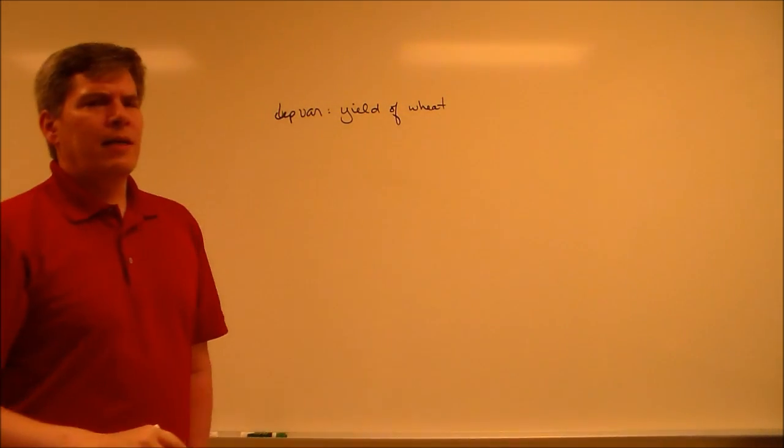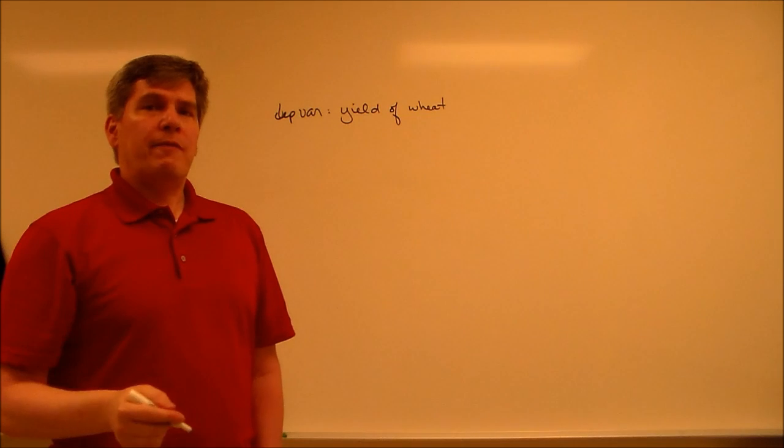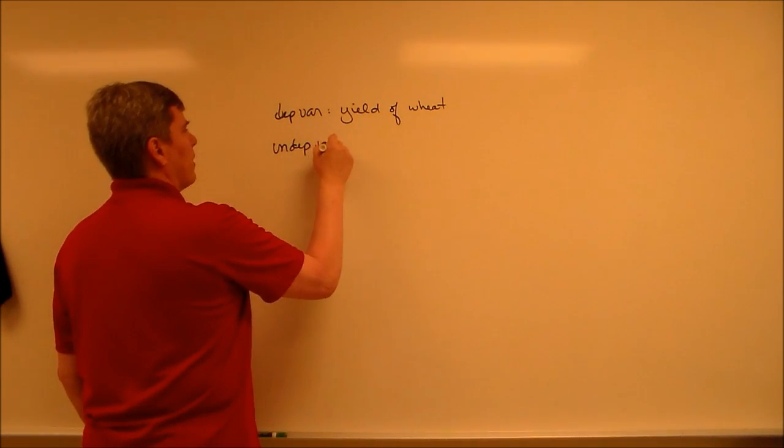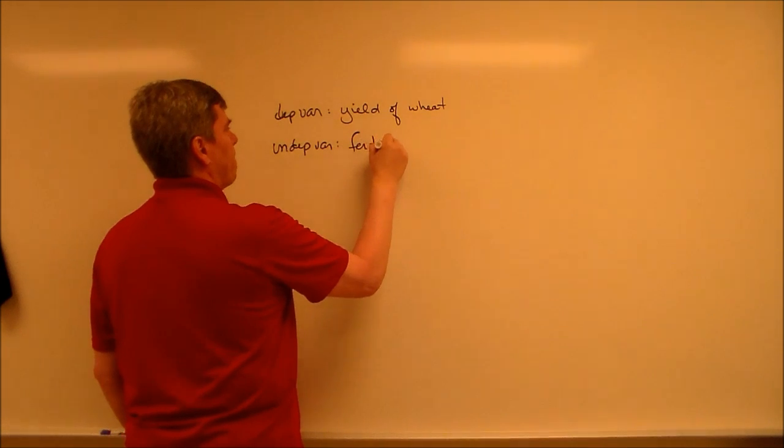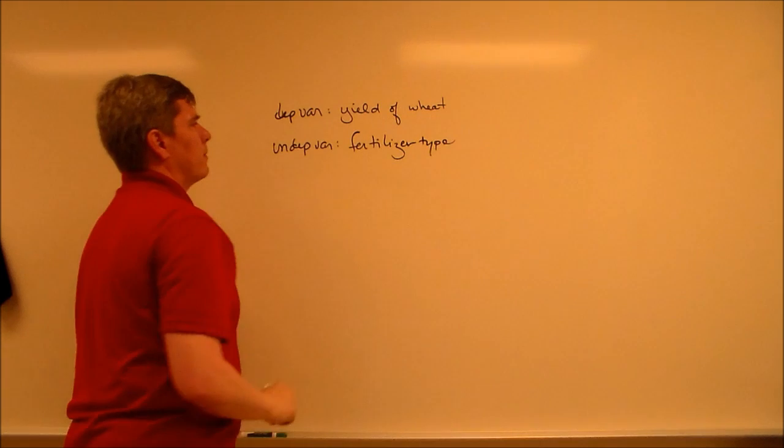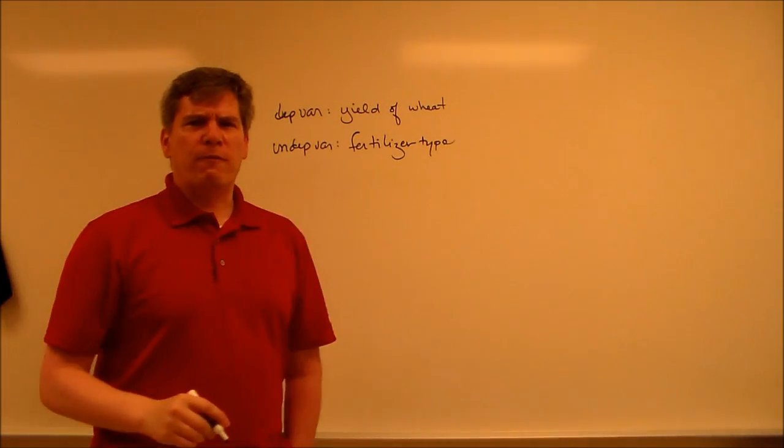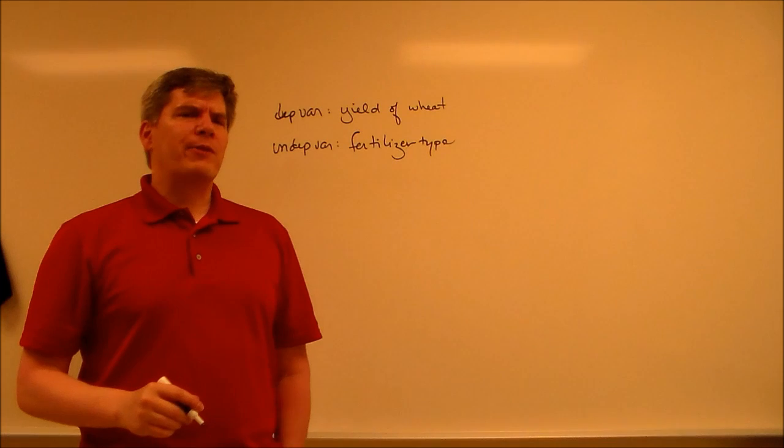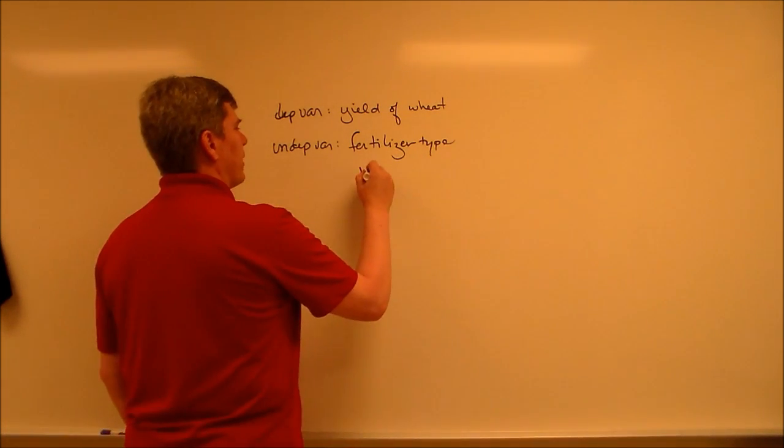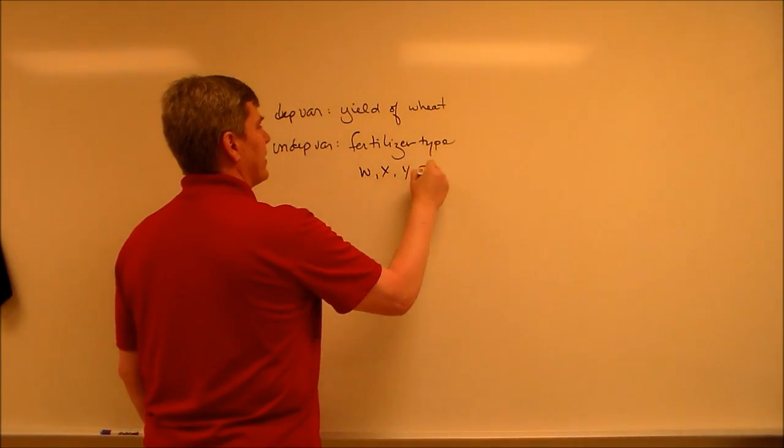Okay, it's got to be wheat. I wrote it. The independent variable is going to be fertilizer type. Let's say that there's four fertilizers, four very well-known fertilizers, W, X, Y, and Z. So, levels are W, X, Y, and Z.